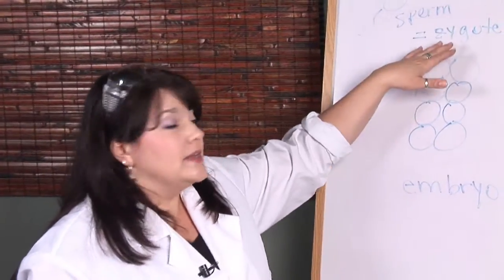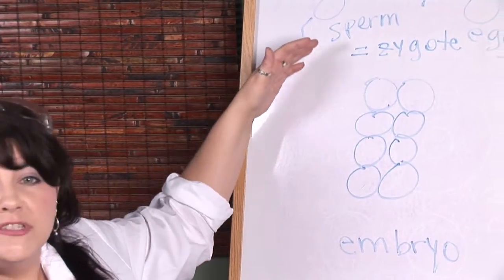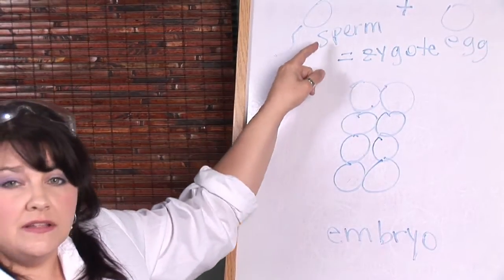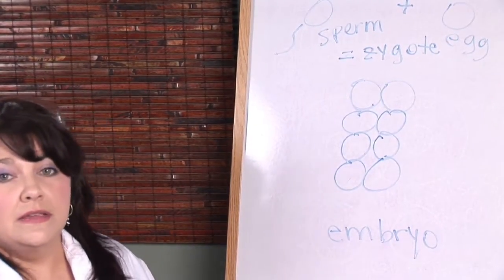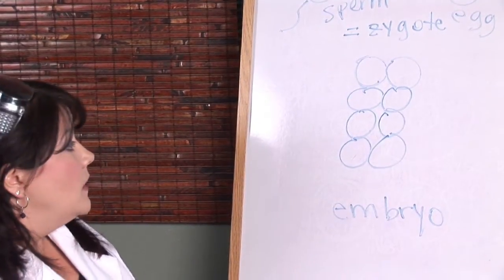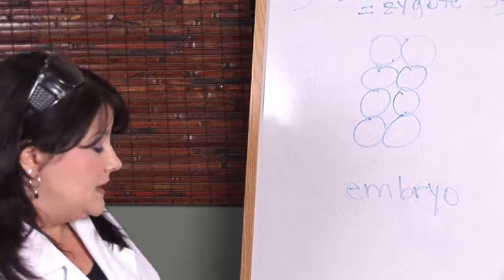They have to come together to create what we call a zygote. The zygote has all of the material needed to become the new organism. That single-celled zygote begins to split. It splits in half, and it splits in half again, and it splits in half again. When it gets to the point of having about eight cells, that's when the embryo splitting can actually happen.